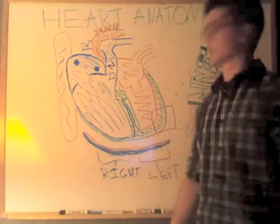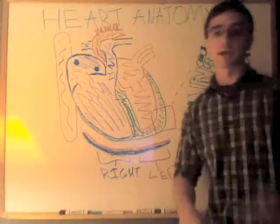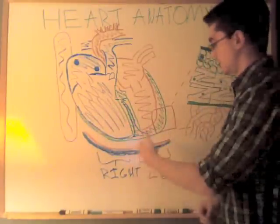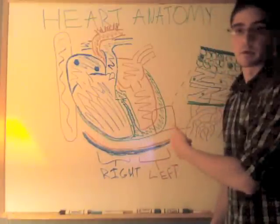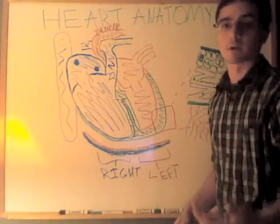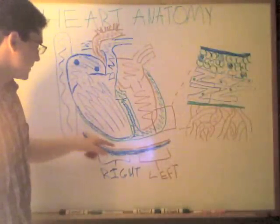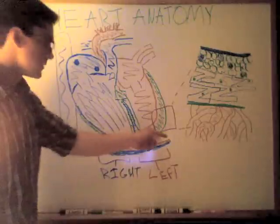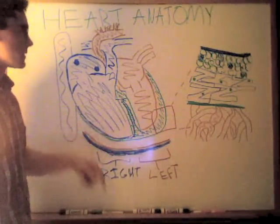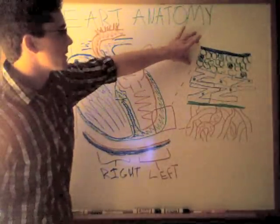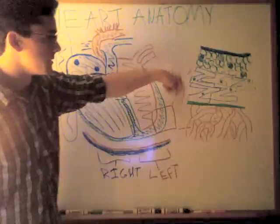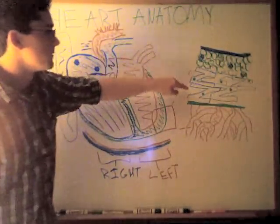Starting from the outside, we have the pericardium: the fibrous pericardium with superior and inferior portions, then the serous pericardium divided into the parietal pericardium and the visceral pericardium — the visceral pericardium is the same as the epicardium. Between them is the pericardial cavity filled with pericardial fluid. Zooming into the heart wall: the epicardium is a smooth connective layer with fat, then the myocardium, then deep to that the endocardium.